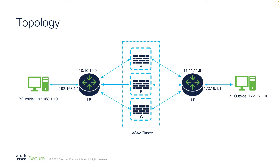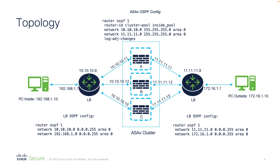Let's take a look at the topology. We've got two PCs inside and outside on the left and right of the screen. We've got two load balancers, which are basically routers running OSPF to load balance traffic among ASAv cluster units, and in the center we have the ASAv cluster units. To explain how load balancing is done, I've included the commands used on my CSR routers which are acting as load balancers.